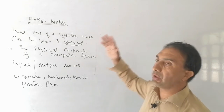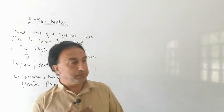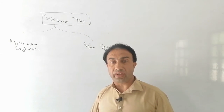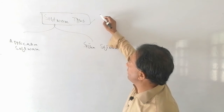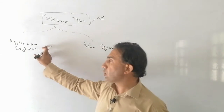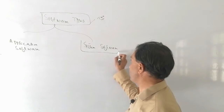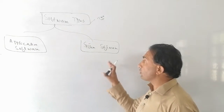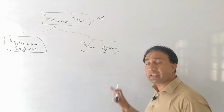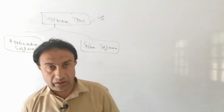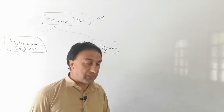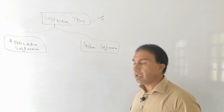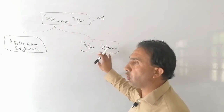Now we will discuss the types of software. There are basically two main types of software: the first is application software and the second is system software. System software is that part of the software which is used to manage all the resources of the computer.